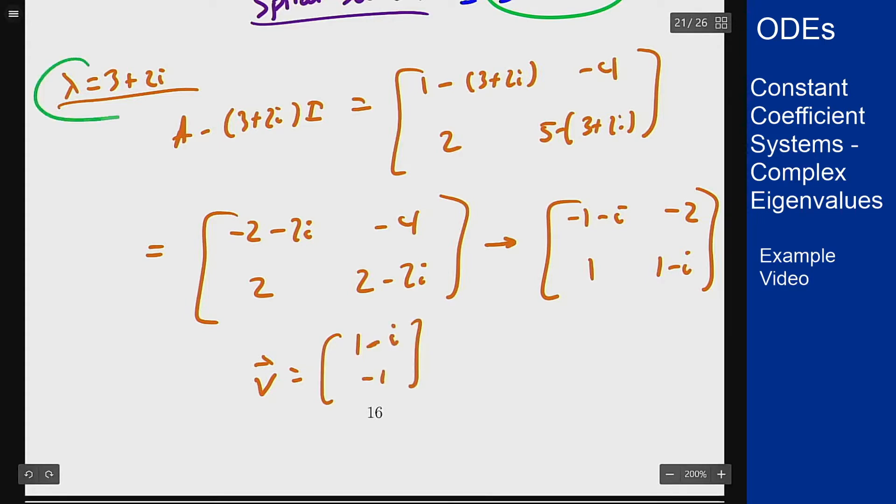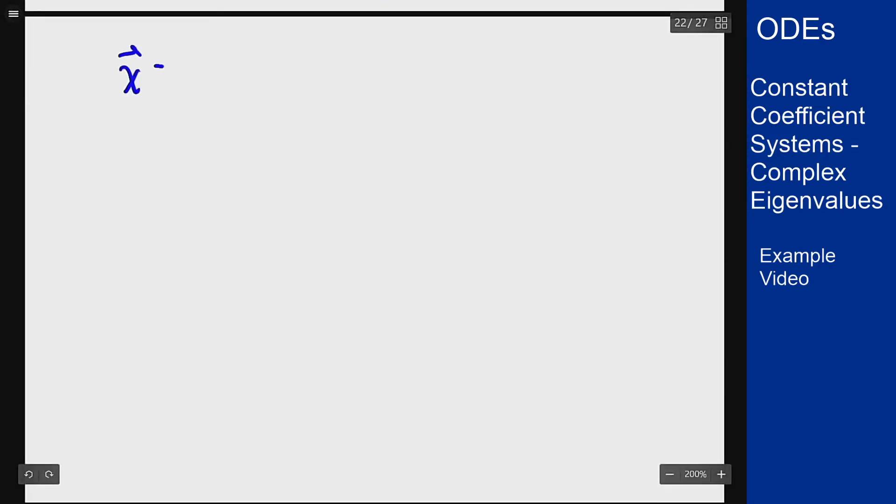Now that we have an eigenvalue and corresponding eigenvector we can go through figuring out the real-valued general solution to solve the initial value problem and sketch the phase portrait. So based on this we know that a complex-valued solution is [1 - i; -1] e^((3 + 2i)t).